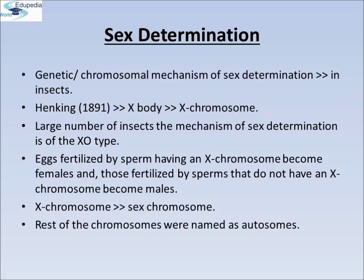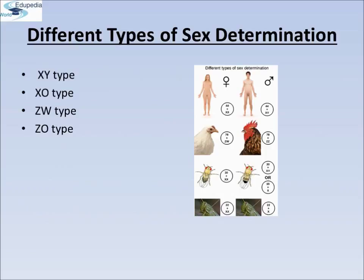Different Types of Sex Determination. The process of sex determination by allosomes, that is sex chromosomes, is called the genetic or chromosomal sex determination. It is brought about by heterogamety, which is the formation of two kinds of gametes in one of the two sexes. There are different mechanisms of chromosomal sex determination: XY, X0, ZW, and Z0. The XY type is seen in humans, the X0 type is seen in the grasshopper, the ZW type is seen in the chicken, and the Z0 type is seen in different moths and others.